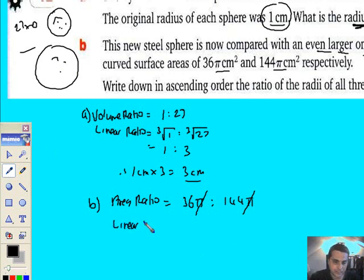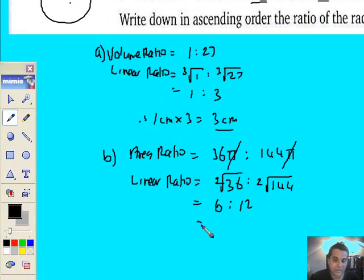So linear ratio is going to be the area ratio square rooted. And the reason I didn't bother to change it into a more simplified form is because the square root of 36 is 6, and the square root of 144 is 12. And that is simply 1 to 2. That is really beautiful.